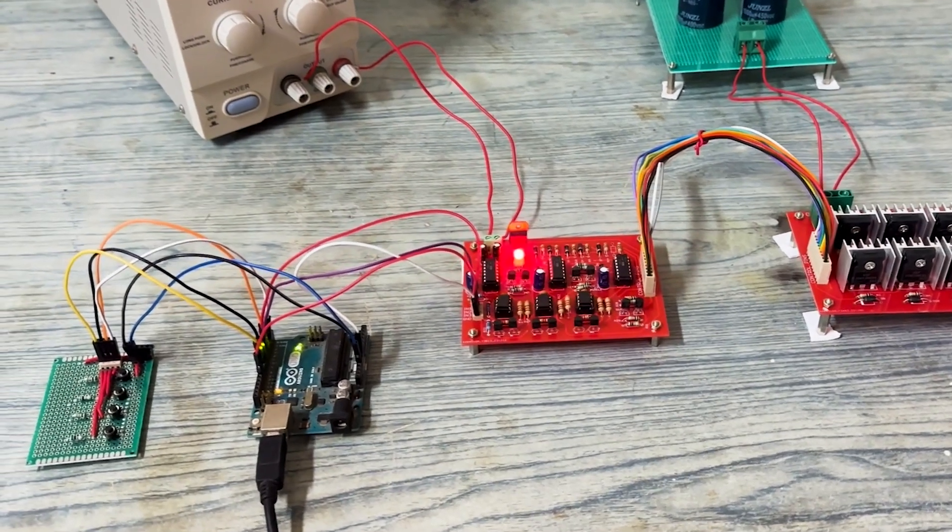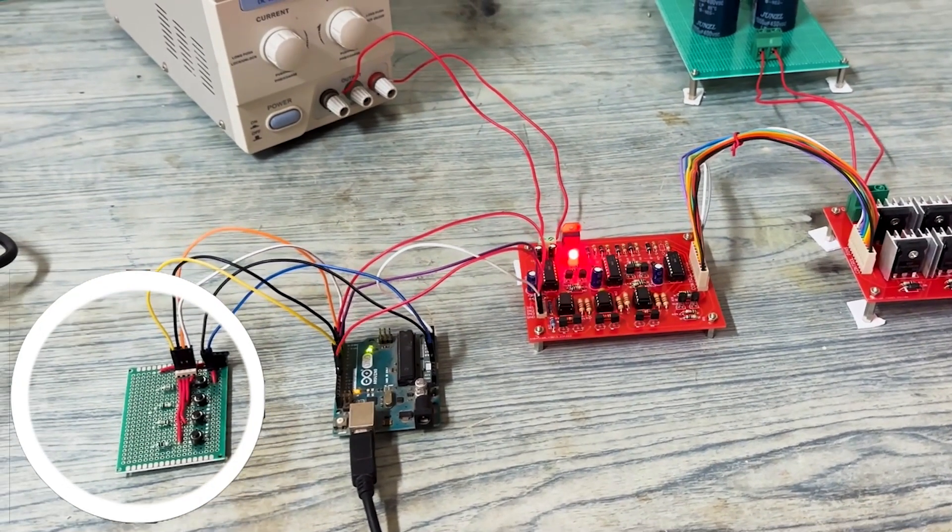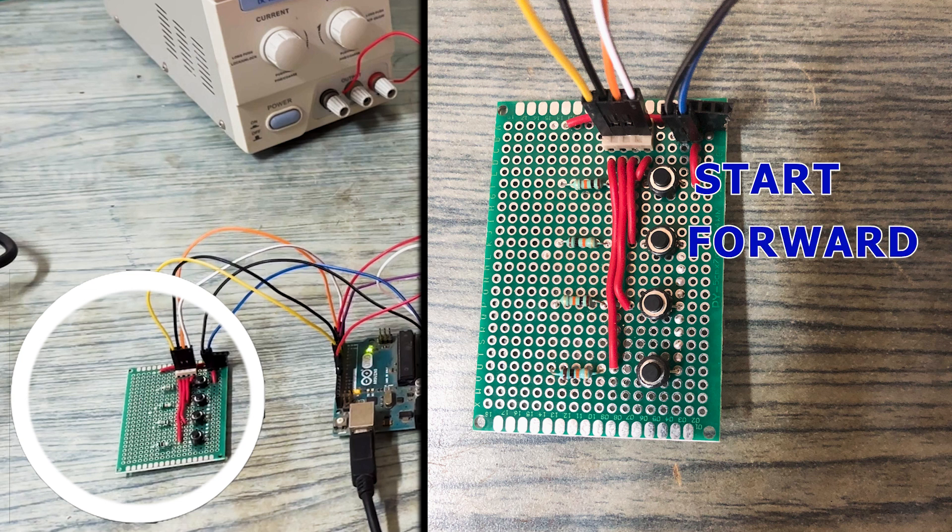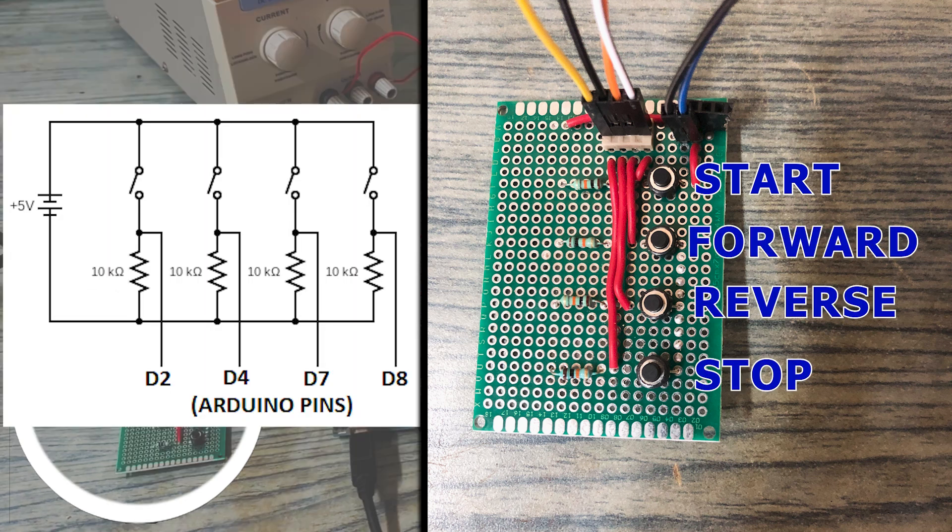Today we are going to use Arduino and a switchboard to start, forward, reverse, and stop the motor. This is the simple circuit of the switchboard. Arduino pins 2, 4, 7, and 8 are connected.